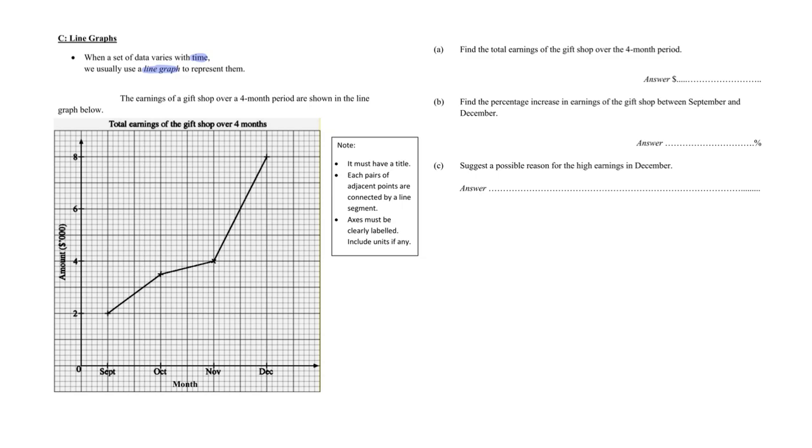So what do we look for in a line graph? Line graphs must of course have a title, and the pairs of points are connected by a line segment. Axes must be clearly labeled. If there's units, do also indicate there.